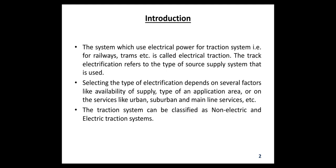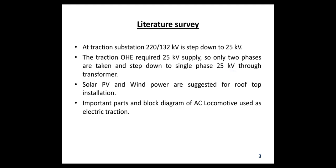Solar photovoltaic and wind power are suggested for rooftop installation, which is a main initiative in India. The plan is to install solar photovoltaic panels and a wind generator at the top of the train roof. The blades of the wind generator rotate and generate electricity during the movement of the train to cater to the auxiliary load. The utilized energy can be stored in a combination of supercapacitors and lithium-ion batteries.